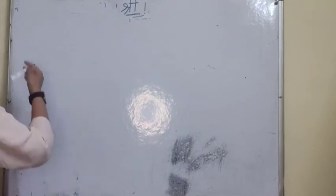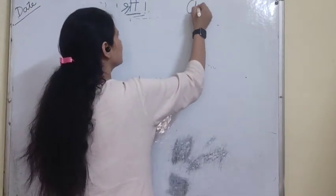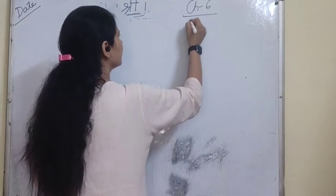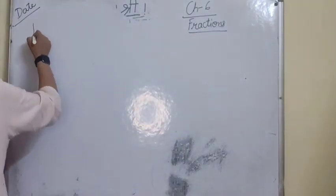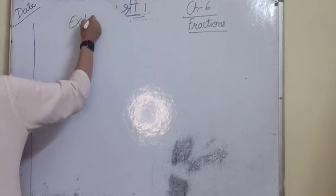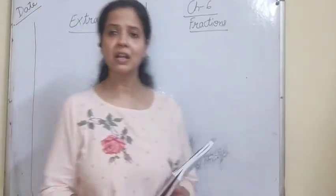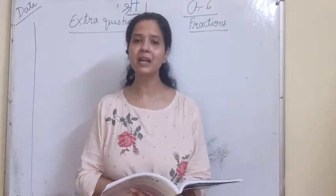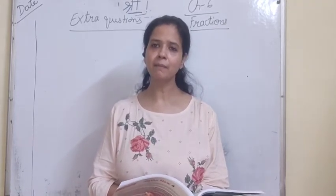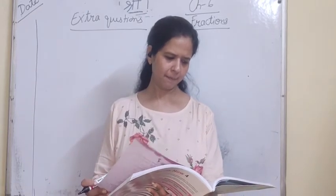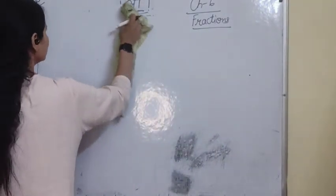Now, it will be equal. Date. Chapter number 6. Fractions. See, we will do extra questions. Extra questions. This all work, you have to do in your revision notebook as well as, which notebook? Revision notebook or practice notebook. Because we have already done the exercise work. So we will do this in practice notebook. Exercise 6E is more. We will say 6E.